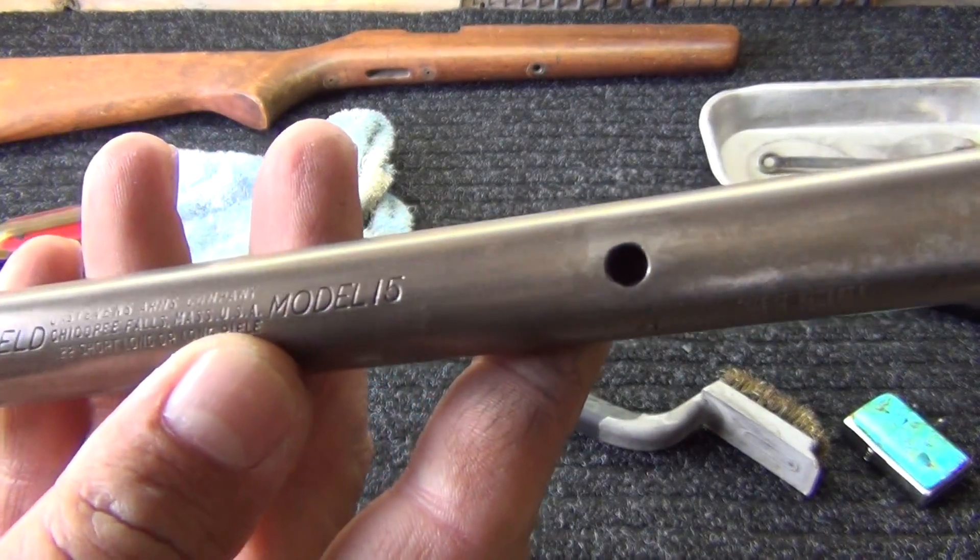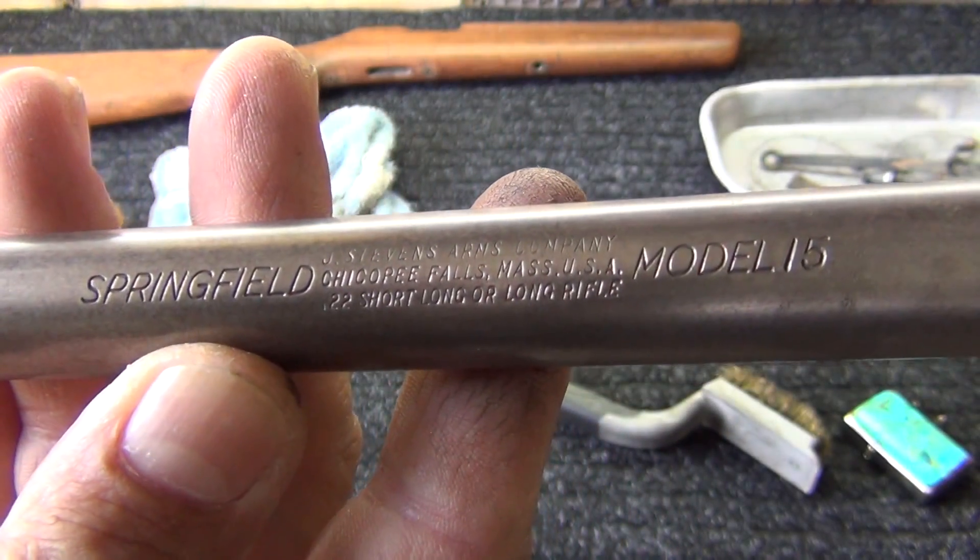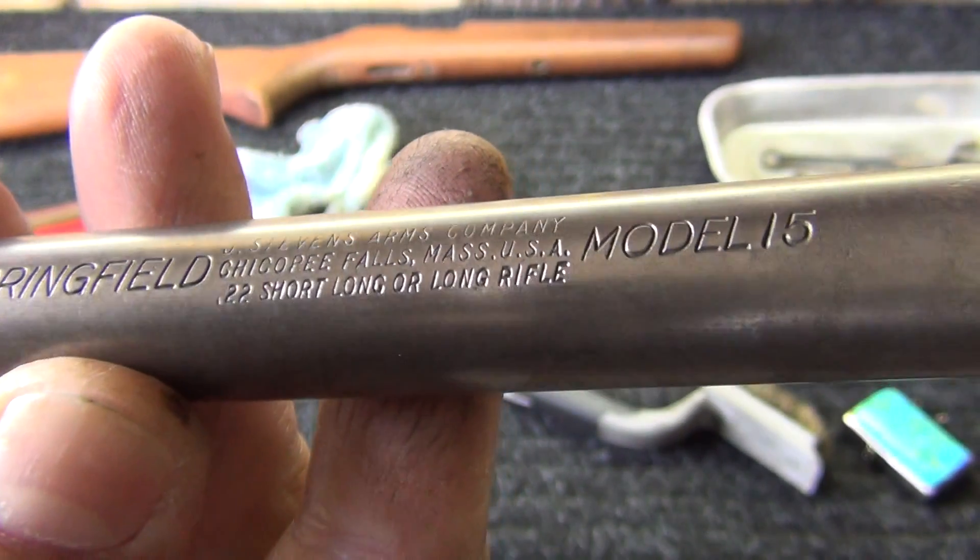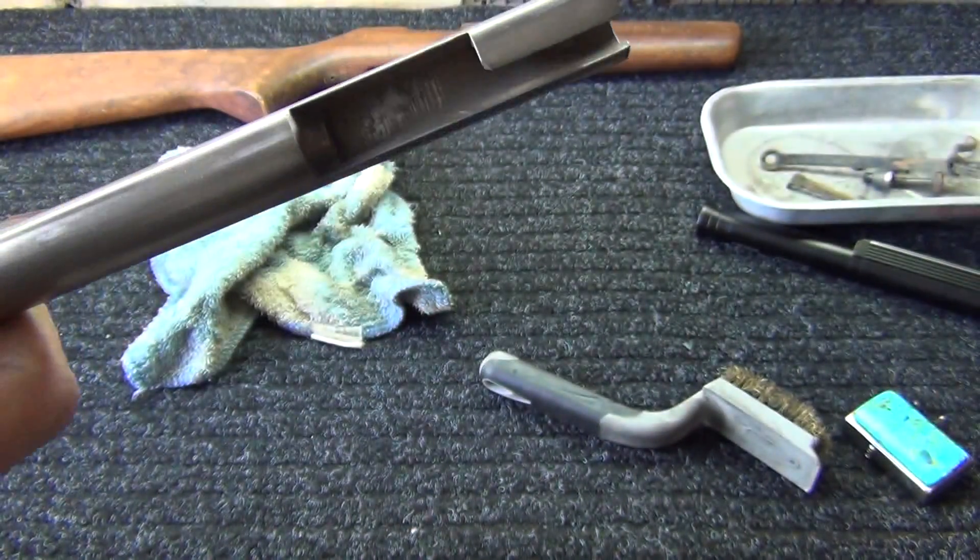So here's the brass brush. You can see how it really has, and it's super smooth. You can see how it's really taken off all of the rust.